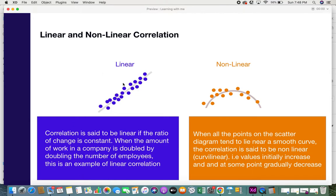The first one is linear correlation. It's the correlation where the ratio of change is constant. For example, let's see when the amount of work in a company is doubled by doubling the number of employees.